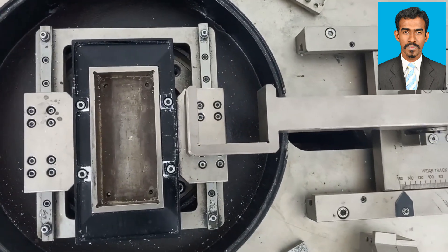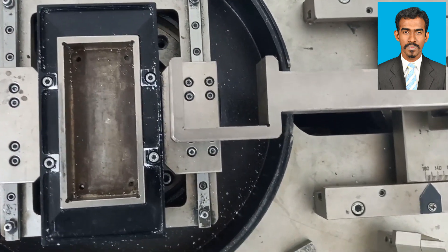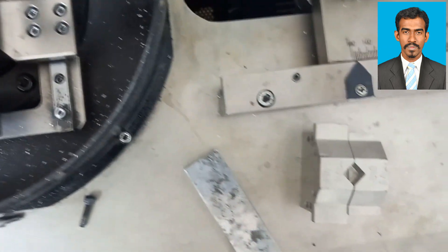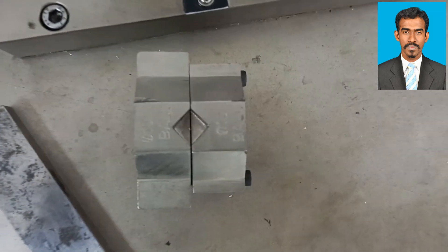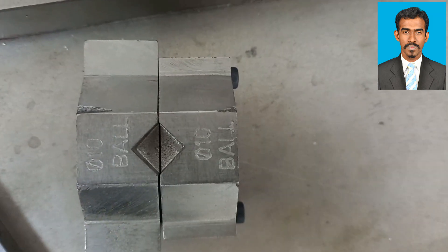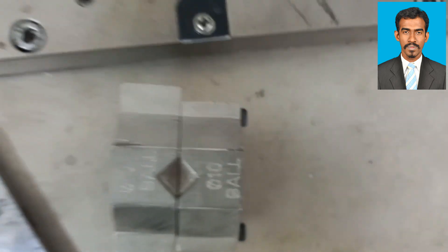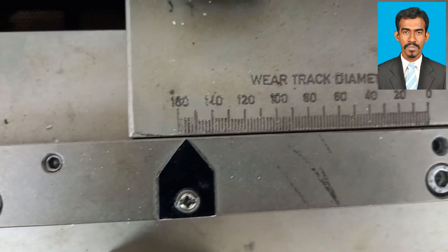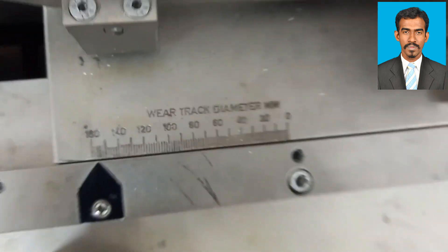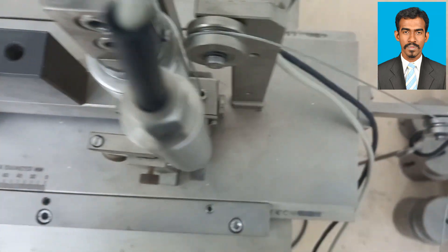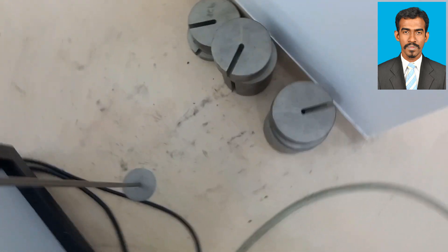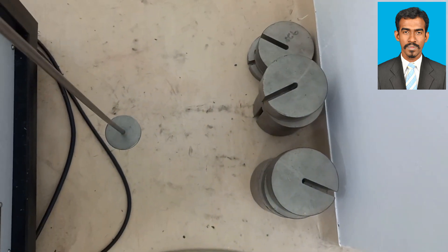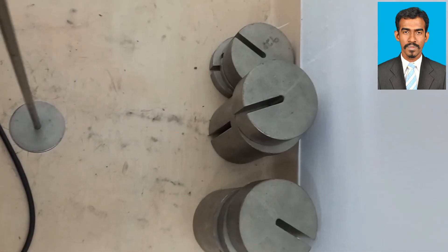A pin-on-disc tribometer is an instrument used to measure the coefficient of friction, frictional force, friction temperature, and wear volume. These tribological parameters can be measured by the pin-on-disc tribometer. It can be operated either with oil or without oil depending on the experimental parameters. Let's see the experiment.